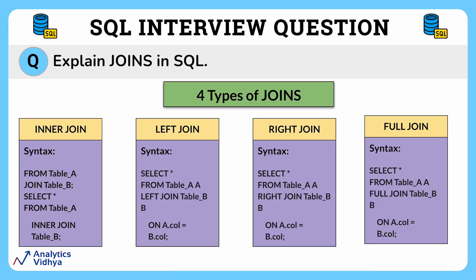Let's look at the types of joins in SQL. There are four types of joins: inner join, full join, left join, and right join. The most common type is the inner join. Inner join returns all the rows from multiple tables when the condition is satisfied. Here is the syntax for inner join.